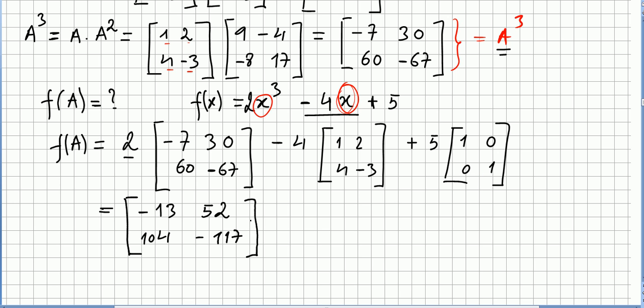So please perform the operation and see if you got the same result as I did. So f of A will be, for this polynomial, of course, minus 13, 52, 104, and minus 117.